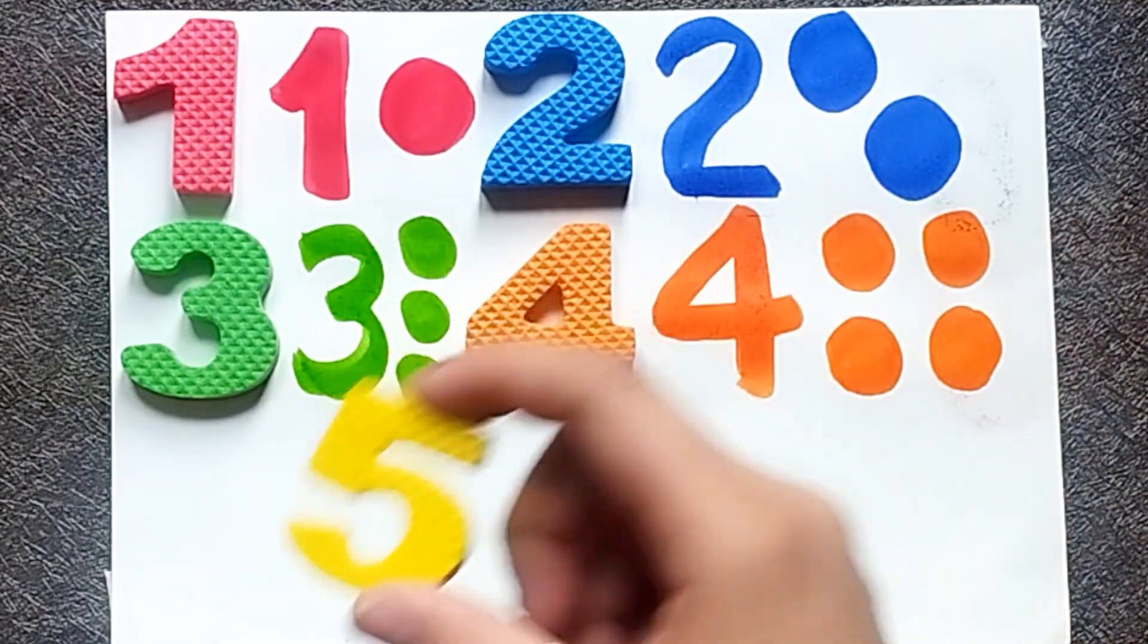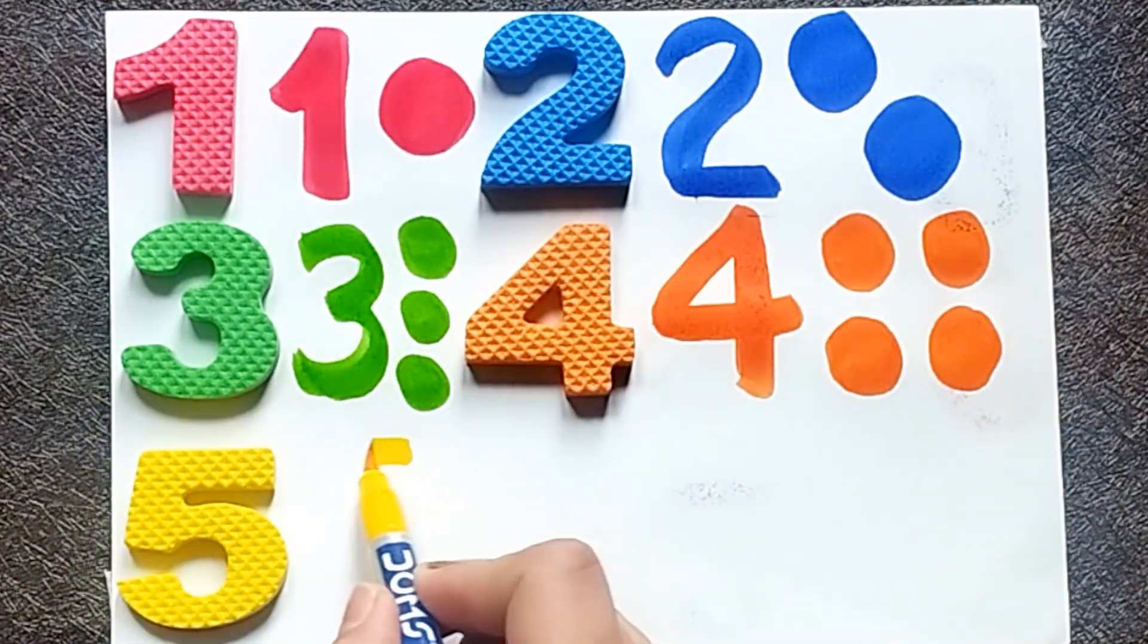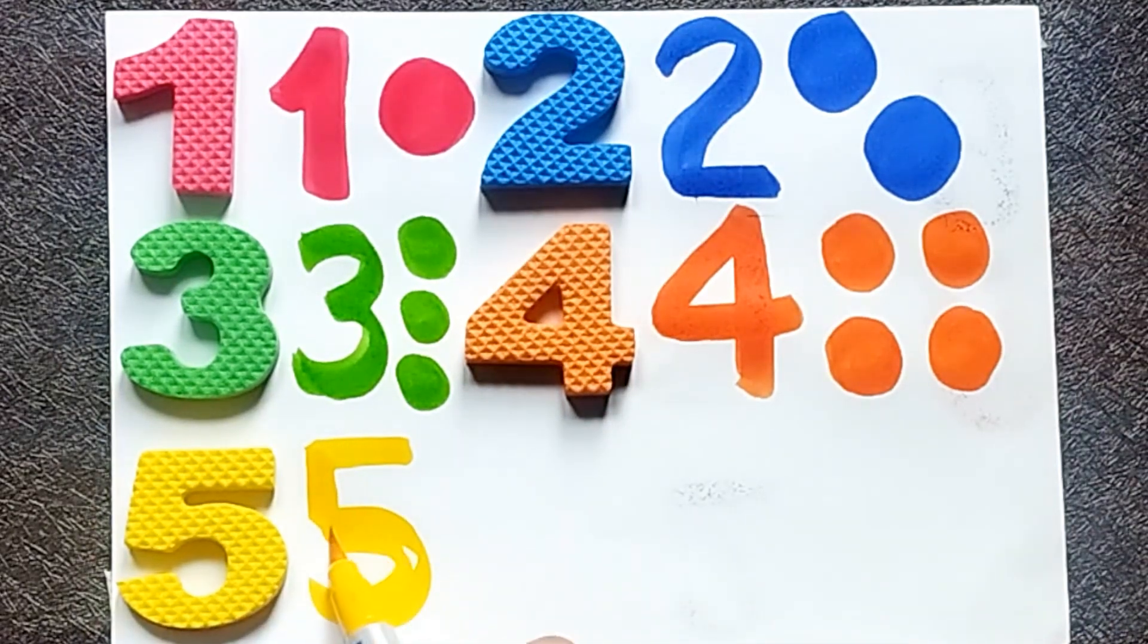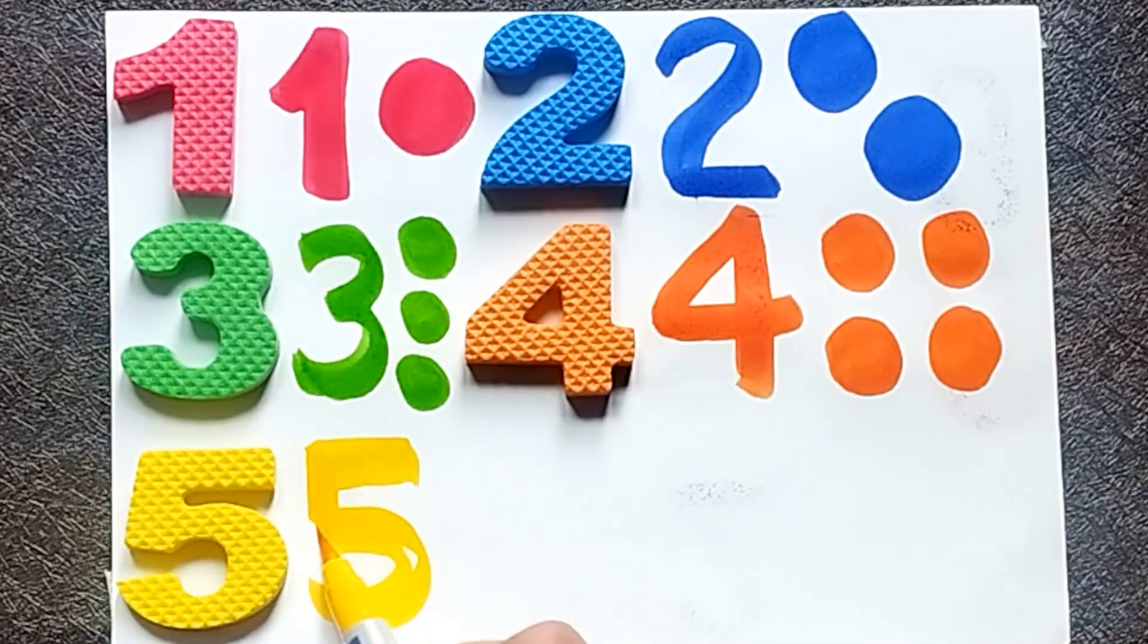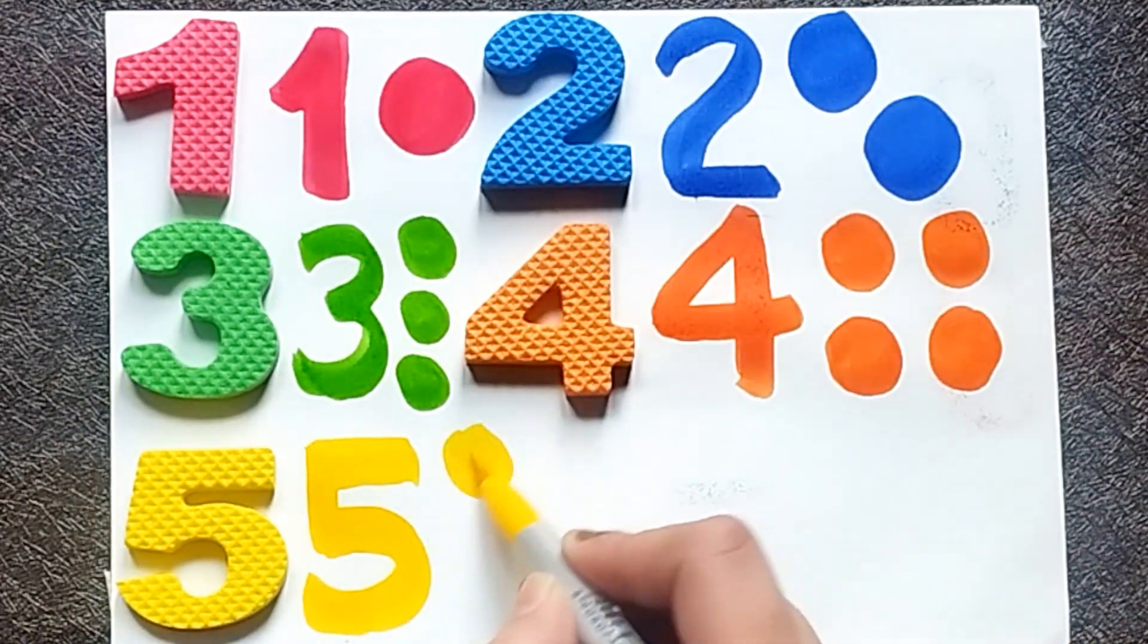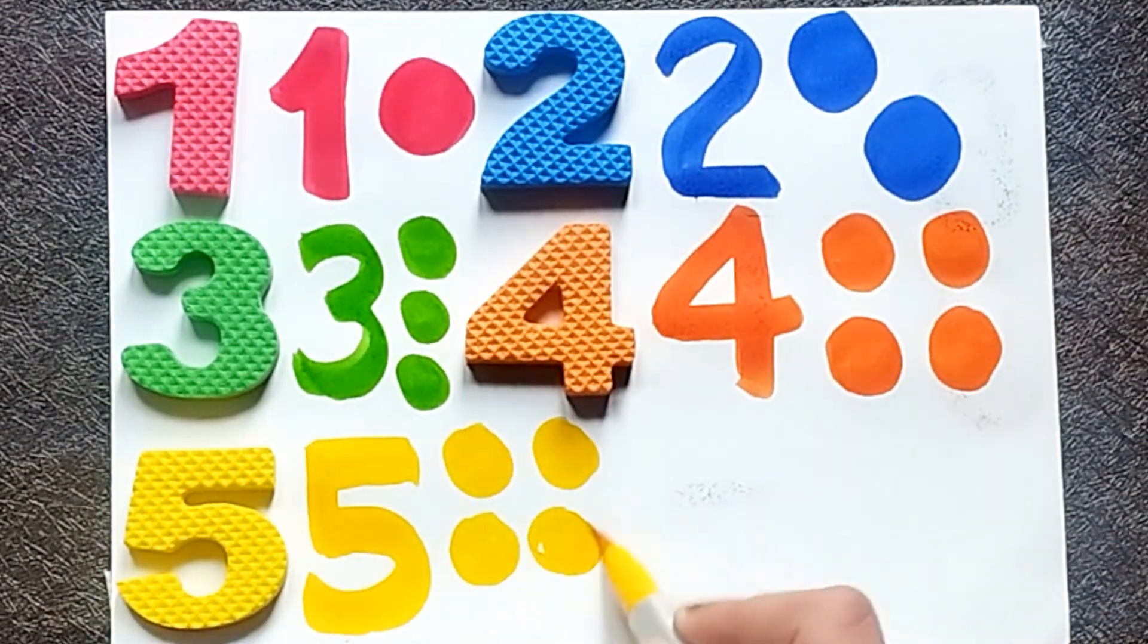Yellow color number 5. I am drawing yellow color number 5. Number 5. One ball, two balls, three balls, four balls, five balls.